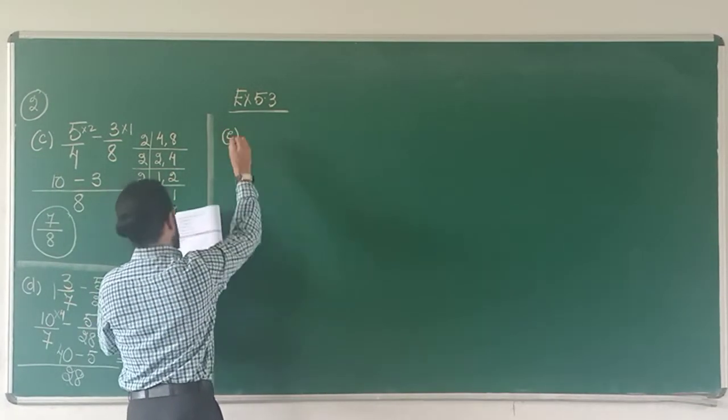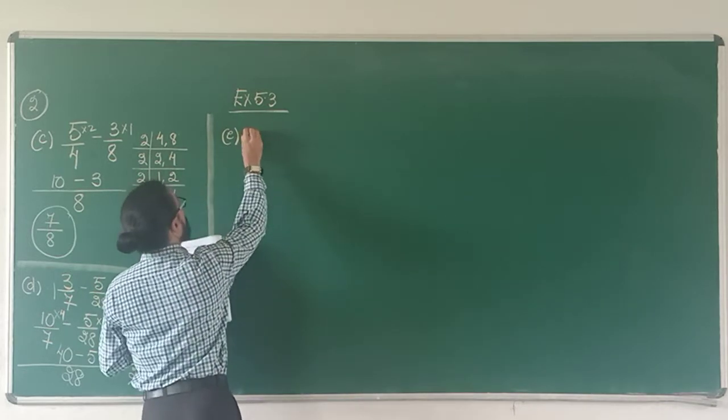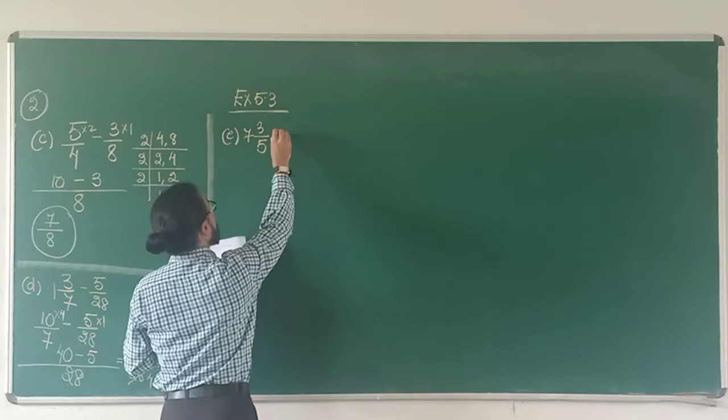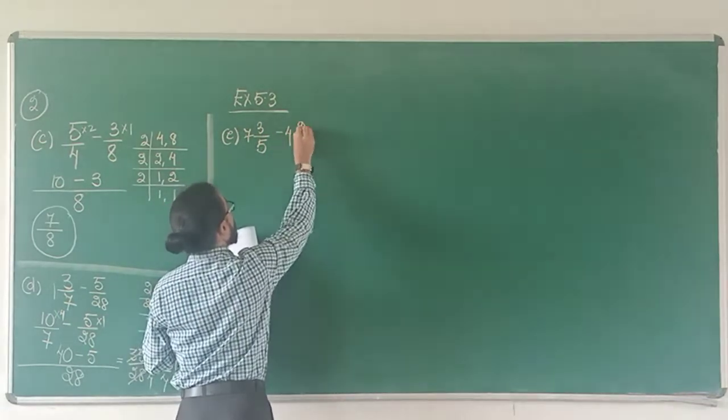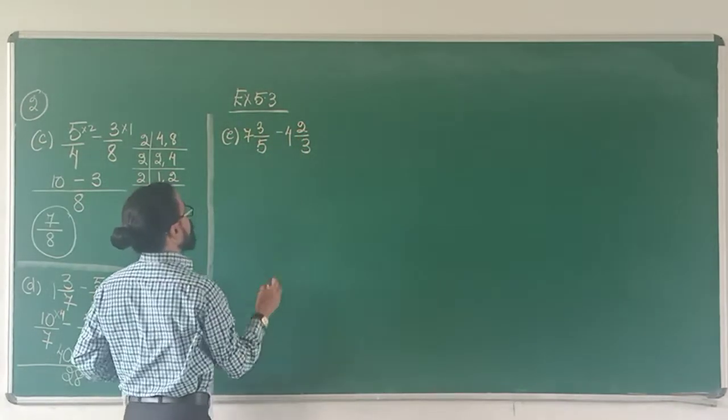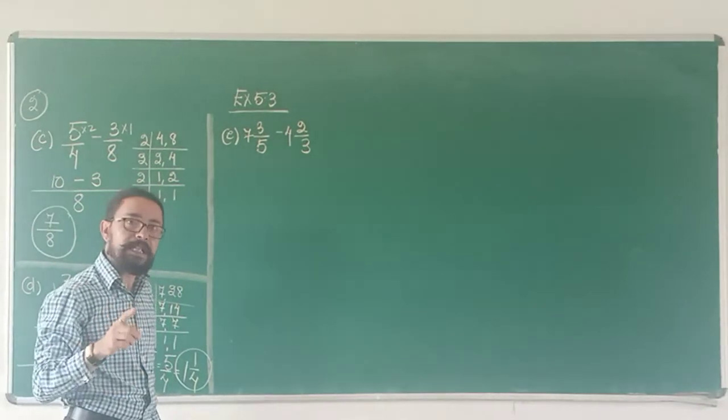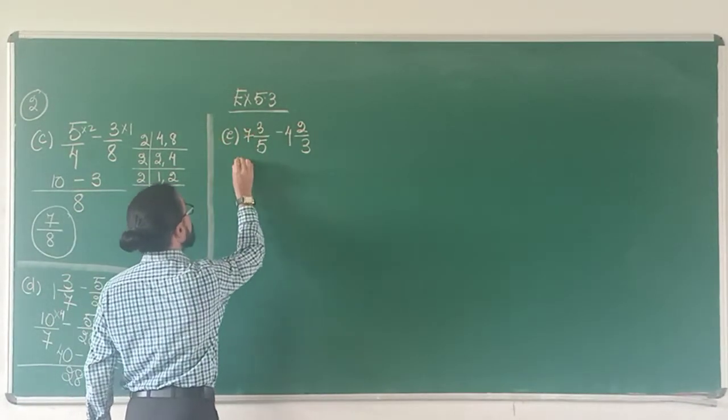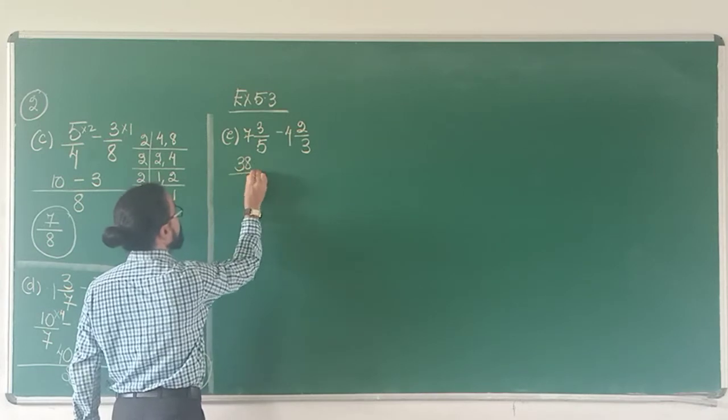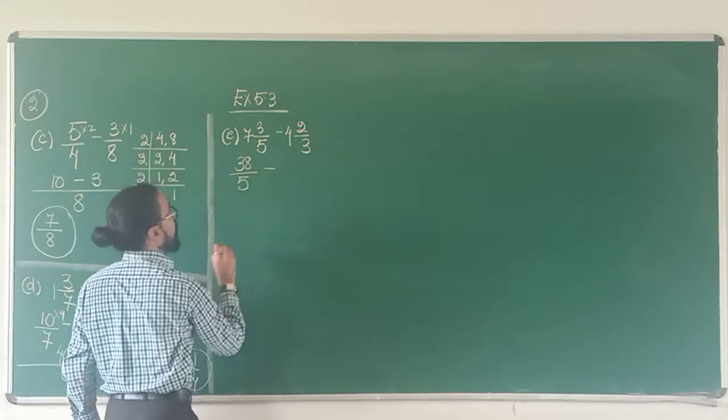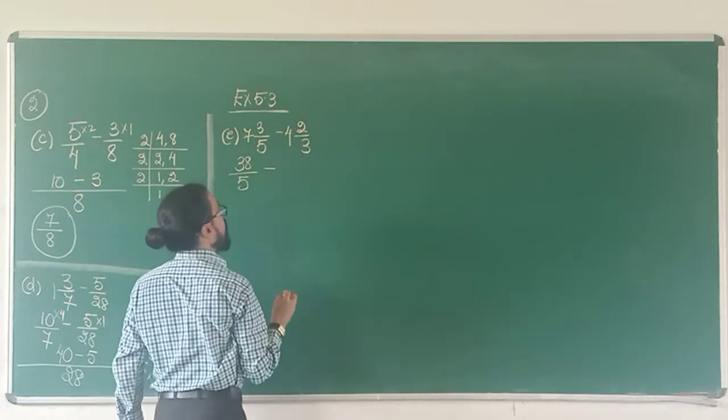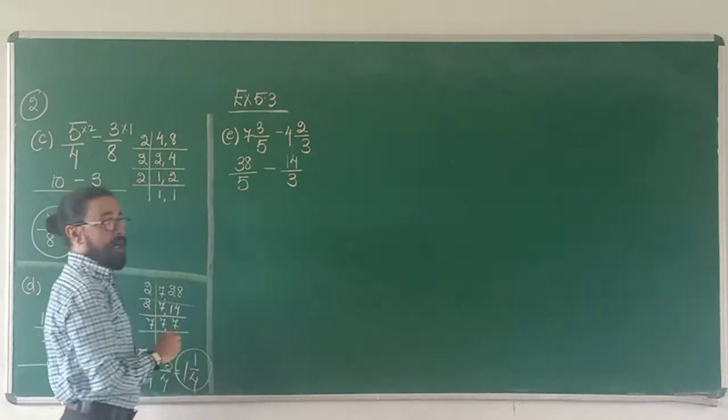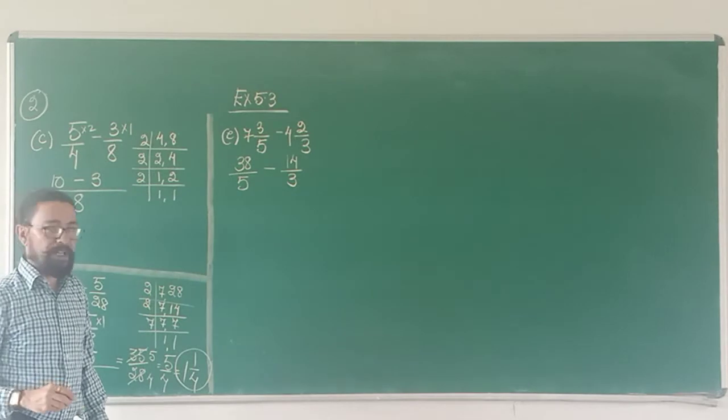Part E says 7 3 upon 5 subtract 4 2 upon 3. Change the mixed fraction to an improper fraction. 5 7's 35 and 3, 38 upon 5, subtract 3 4's are 12 and 2, 14 upon 3. Now I have to find the LCM of 5 and 3.